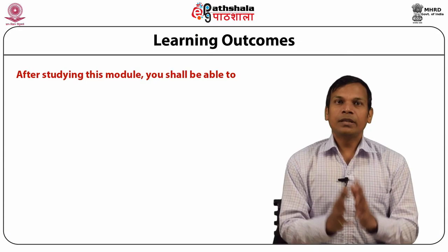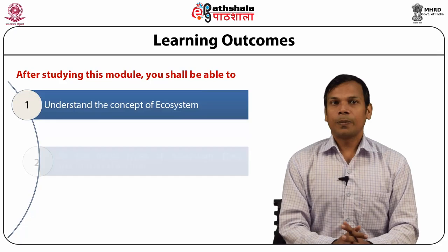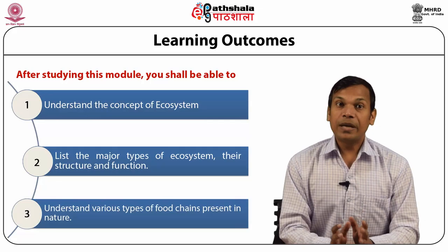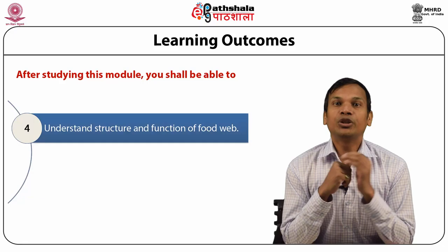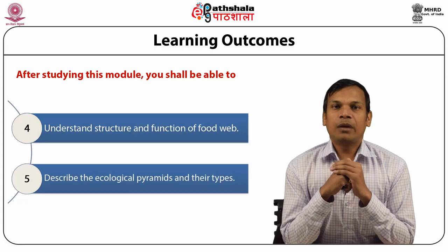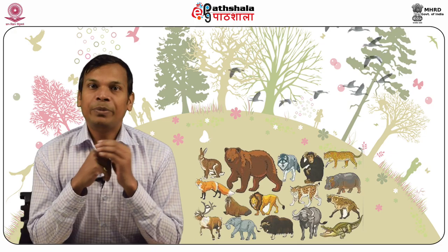Learning Objectives. After studying this module, you shall be able to understand the concept of ecosystem, list the major types of ecosystem, their structure and function, understand various types of food chains present in nature, understand structure and function of food web, and describe the ecological pyramids and their types.